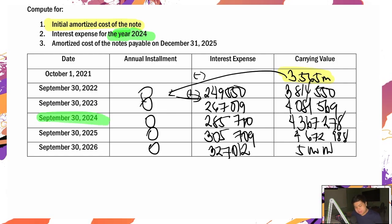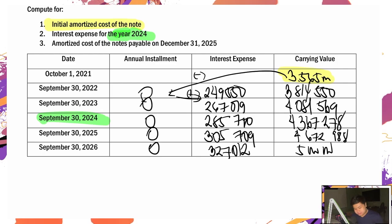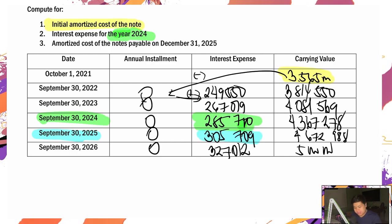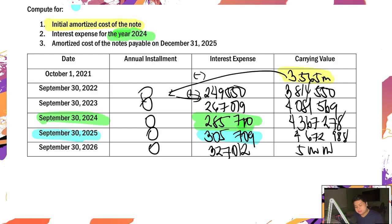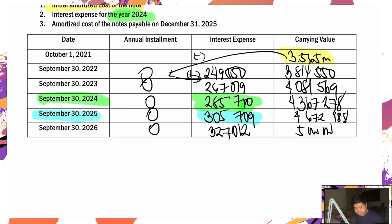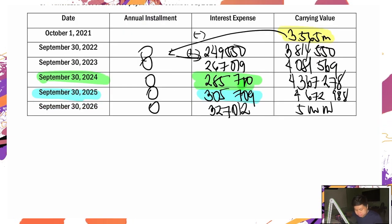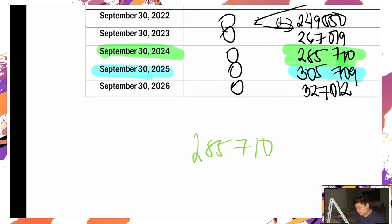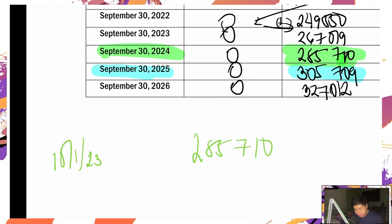Sakop itong dalawa: October 1, 2023 hanggang September 30, 2024 — that's one period. Tapos yung isa: 305,709, good for October 1, 2024 hanggang September 30, 2025. So kailangan natin siyang himayin kasi hindi lahat sakop ng 2024.